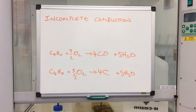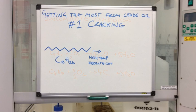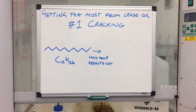So this occurs when there is insufficient oxygen to combine with the fuel. We're now going to look at three different ways that the petroleum industry gets the most from the crude oil. So the first method we're going to look at is called cracking.